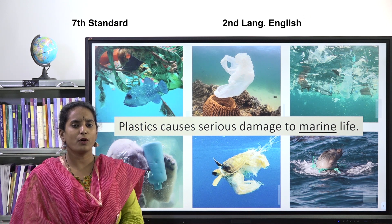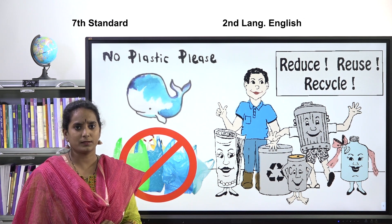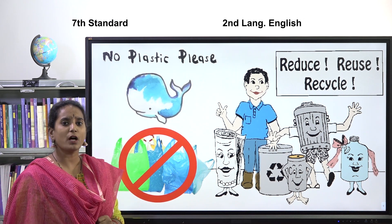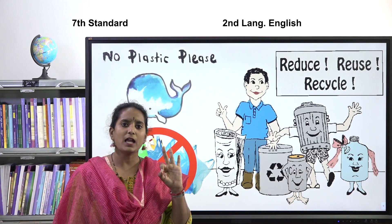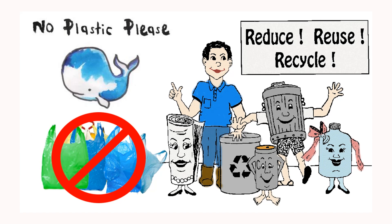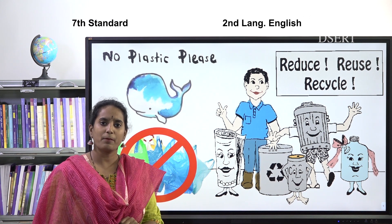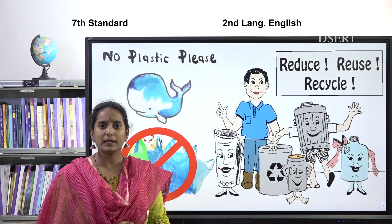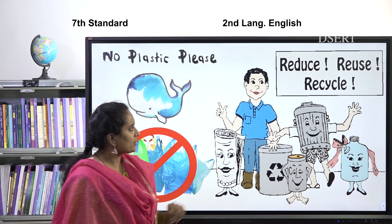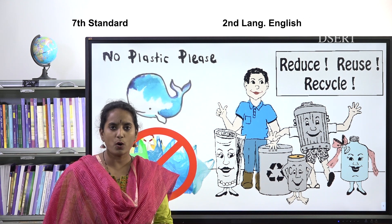What is the solution for all this? How can we stop it? We have to say no to plastic and minimize the use of plastic. Minimize means we have to reduce the use of plastic. For this, we can remember the 3R formula. The 3Rs are: Reduce — the first step, where we minimize the use of plastic; Reuse — we use the same object again and again instead of throwing it away; and Recycle — we can recycle plastic and make something new out of it.